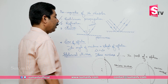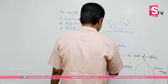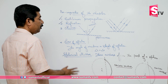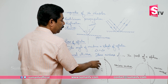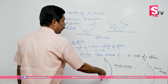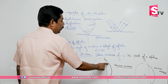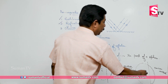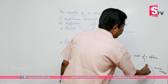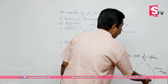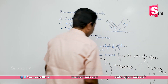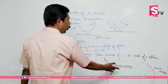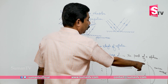Concave and convex mirrors can be identified easily. The reflecting surface from which light is reflected is inward — that is a concave mirror. A convex mirror has the reflecting surface outside, with the inner surface silvered. In the case of a concave mirror, the outer surface is silvered.